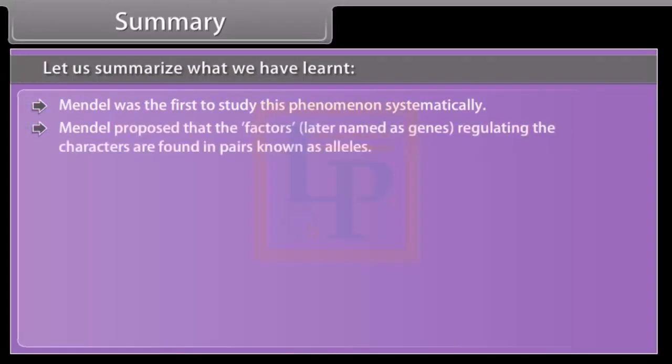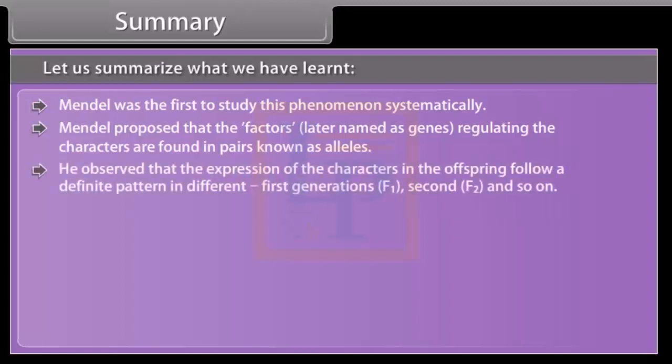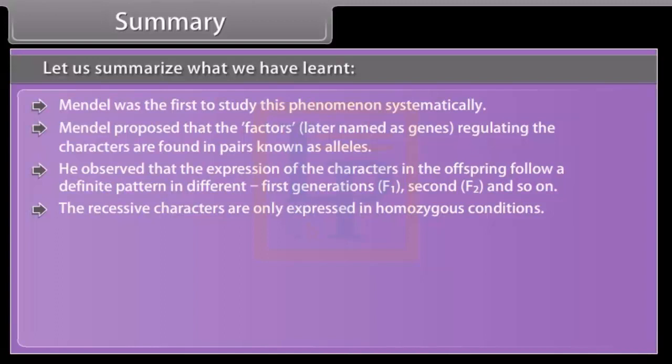Summary. Let us summarize what we have learned. Mendel was the first to study this phenomenon systematically. Mendel proposed that the factors, later named as genes, regulating the characters are found in pairs known as alleles. He observed that the expression of the characters in the offspring follow a definite pattern in different generations: first F1, second F2, and so on. The recessive characters are only expressed in homozygous conditions.